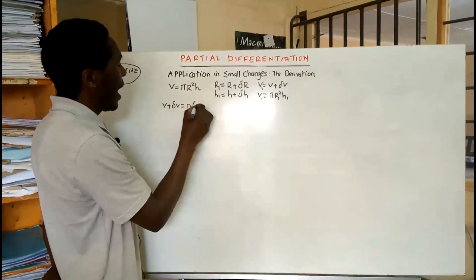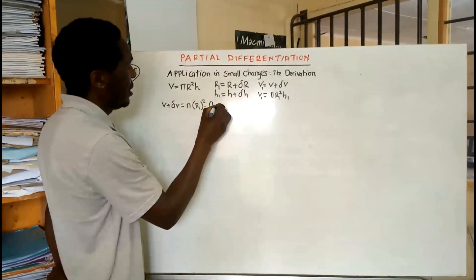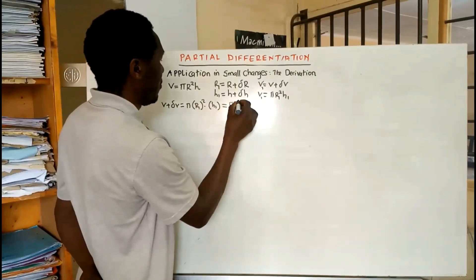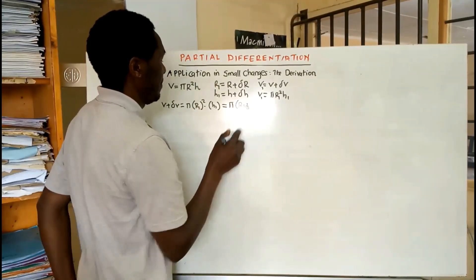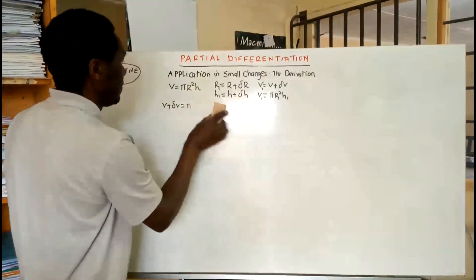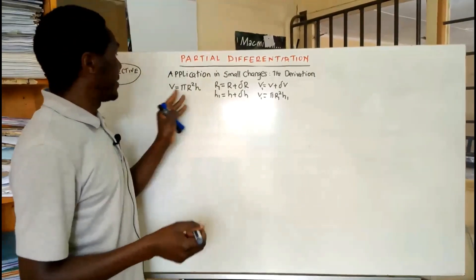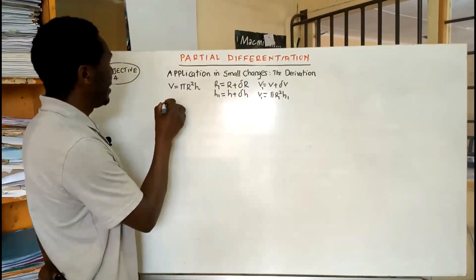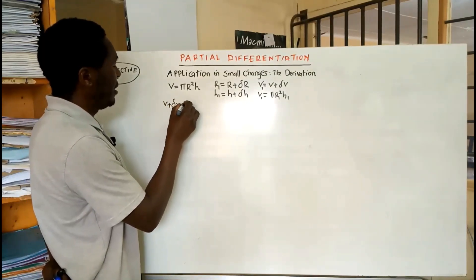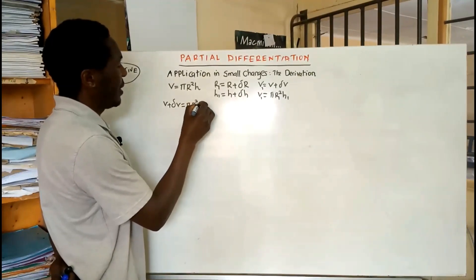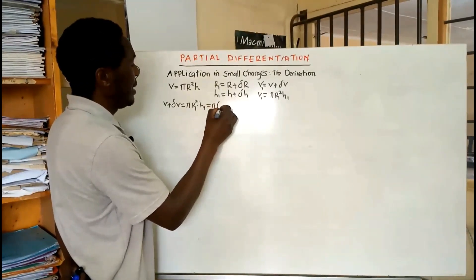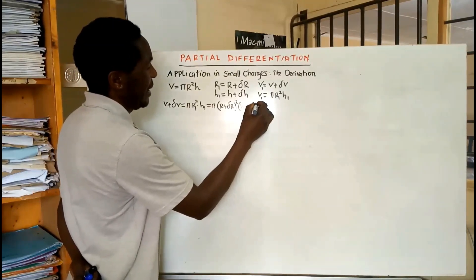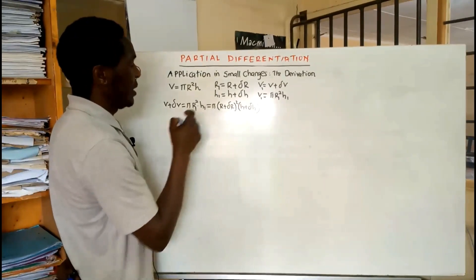If we put these changes into the formula, V plus a small change in V is equal to pi times r sub one squared times h sub one, which is equal to pi times the bracket: r plus delta r, all squared, times h plus delta h. We are going to use the binomial theorem to expand that.